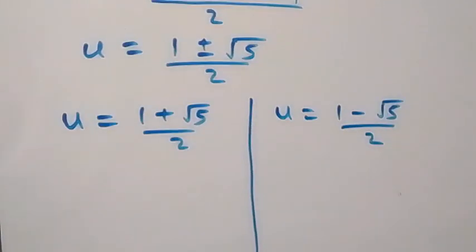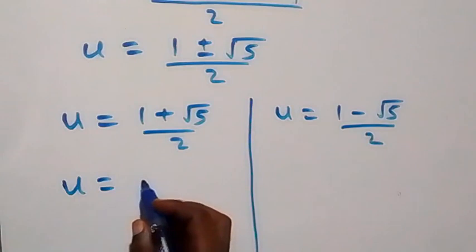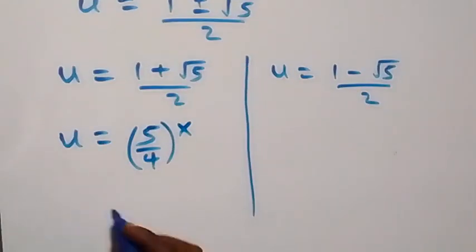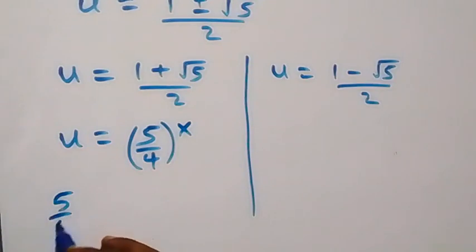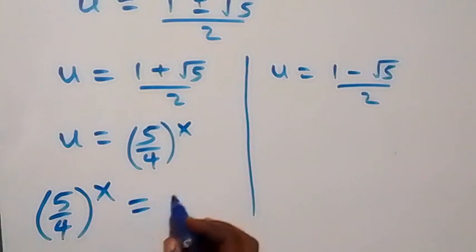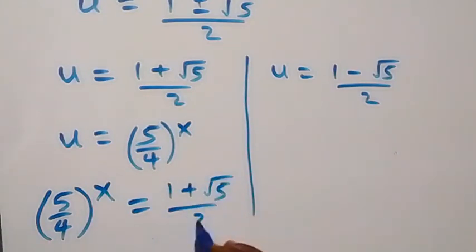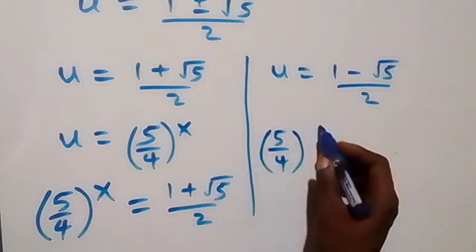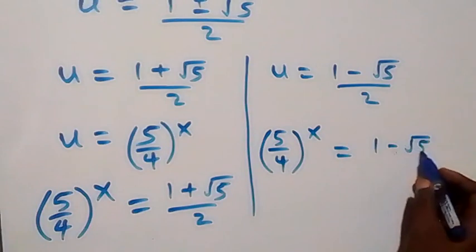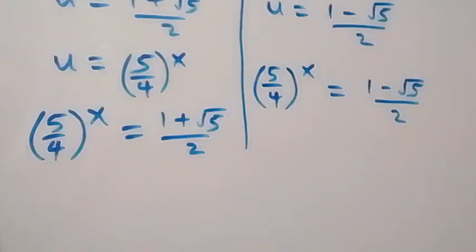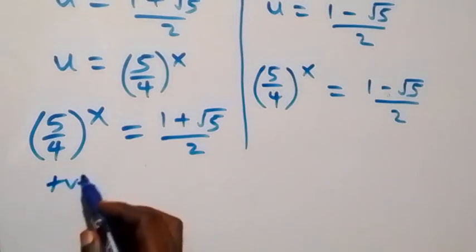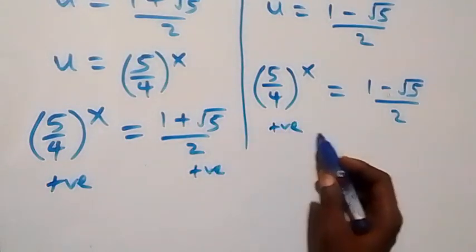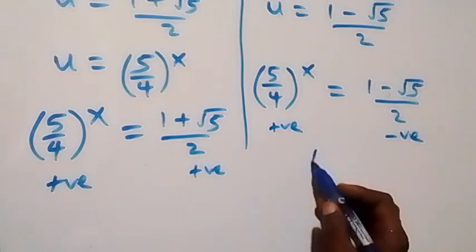Recalling that we represented u as (5/4) raised to power x: on one side, (5/4)^x equals (1 + √5)/2, and on the other side, (5/4)^x equals (1 - √5)/2. The left-hand side is always positive, and (1 + √5)/2 is also positive, but (1 - √5)/2 is negative. So there is no solution from the second case.